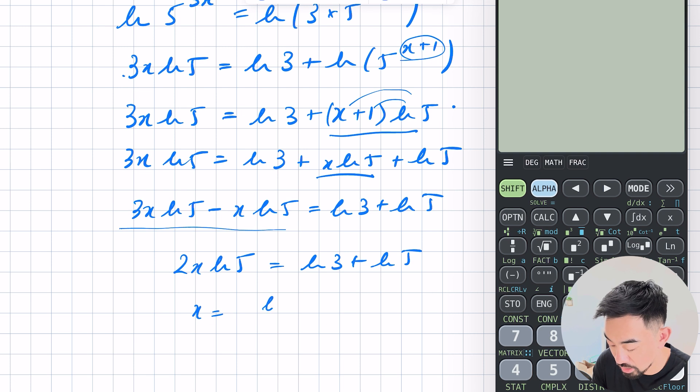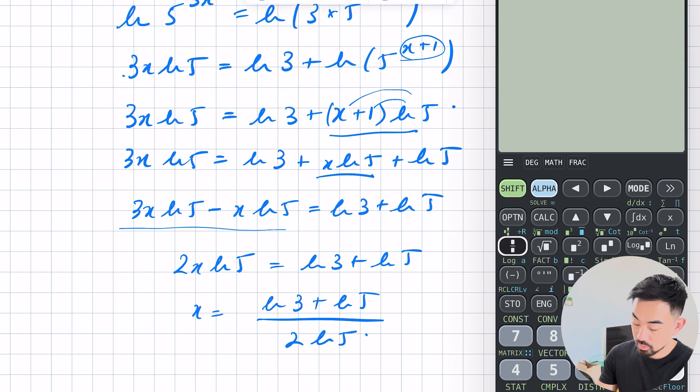Now here hopefully you can see these are actually like terms. So you've got 3x ln 5 minus x ln 5 that's 2x ln 5 is equal to ln 3 plus ln 5. Divide both sides by 2 ln 5. So ln 3 plus ln 5 over 2 ln 5. Put that in the calculator. And your answer is 0.841. Done.